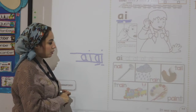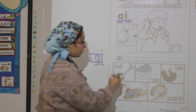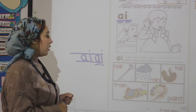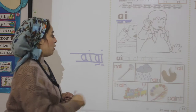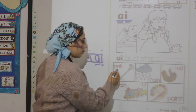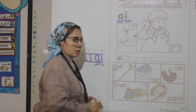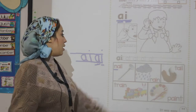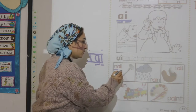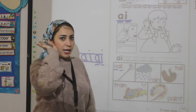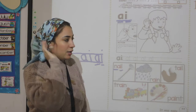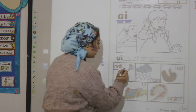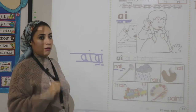Look at this picture. What is this? Nail. What is the first sound in the word nail? N. And what is the middle sound? A. What is the last sound? L.